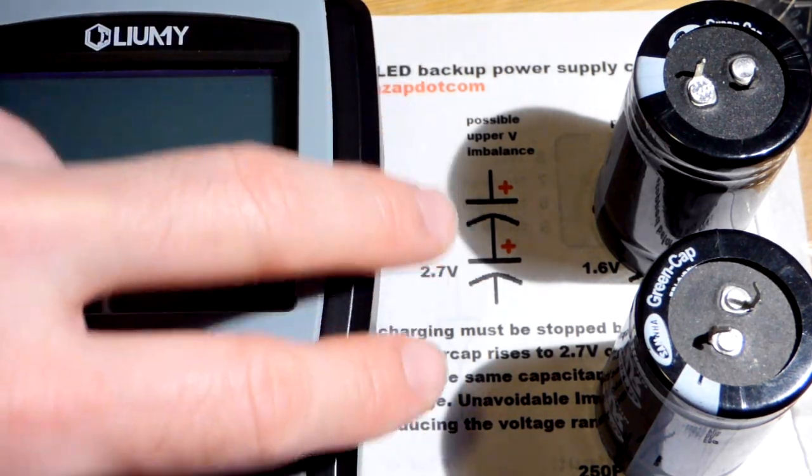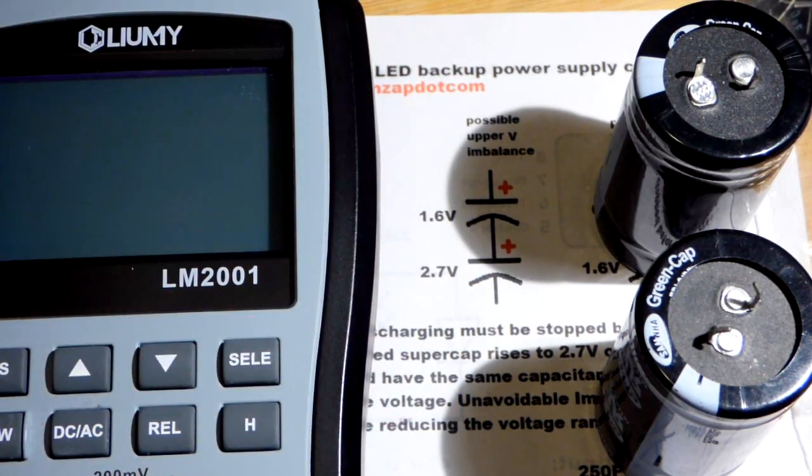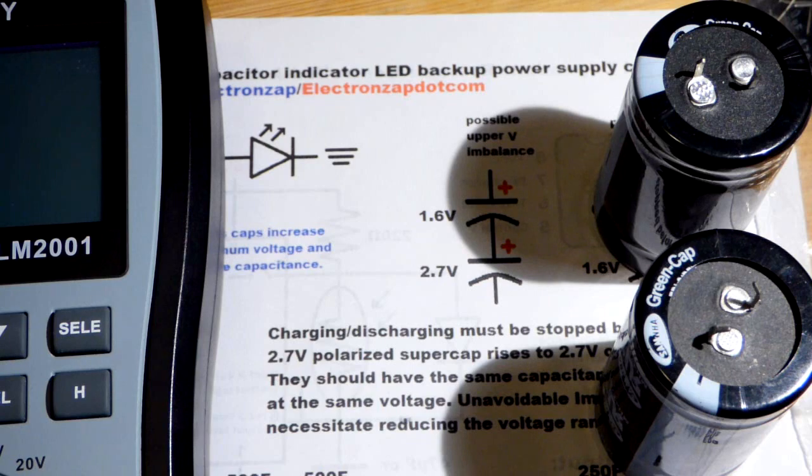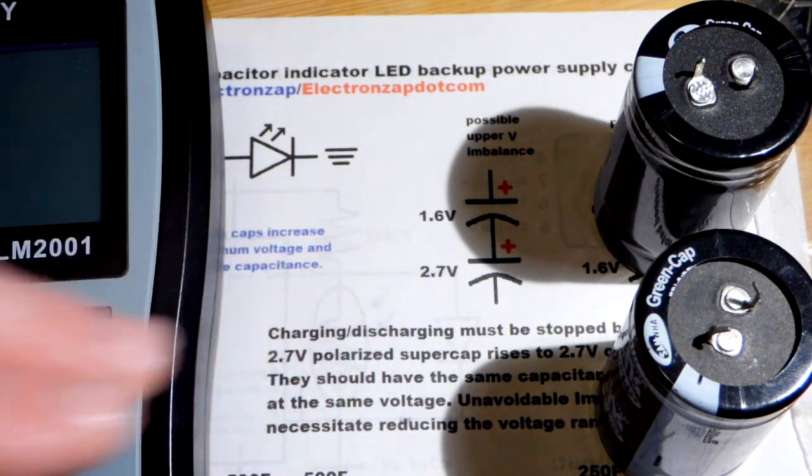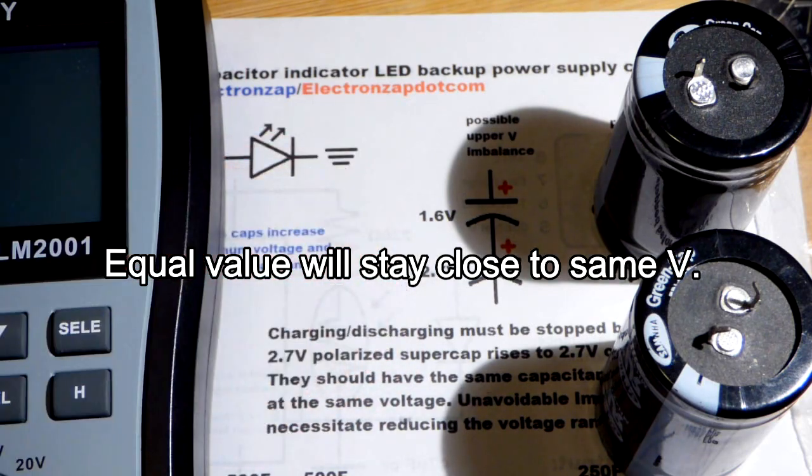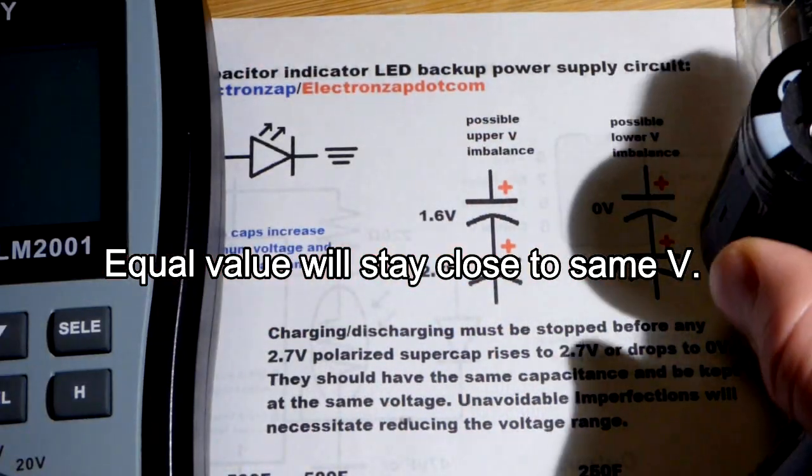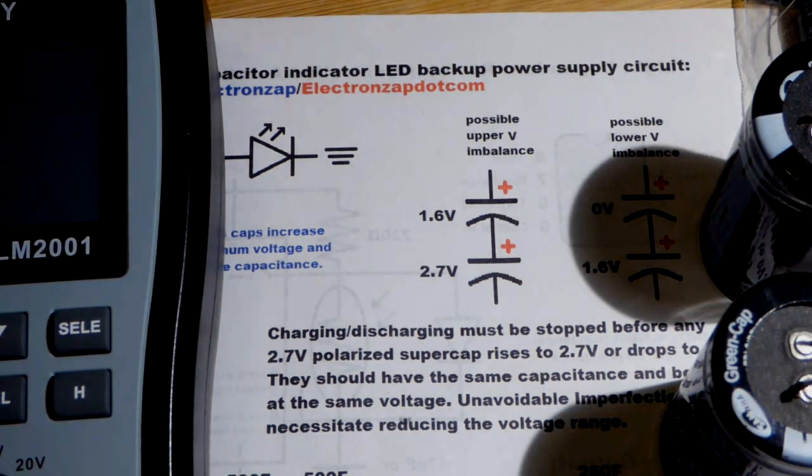Super capacitors and capacitors in series are tricky. You just want to not charge them near their maximum—leave a safety margin and realize that they won't charge equally. One may be getting to a dangerous level while charging or discharging, so you want to stop charging or discharging them well before that.